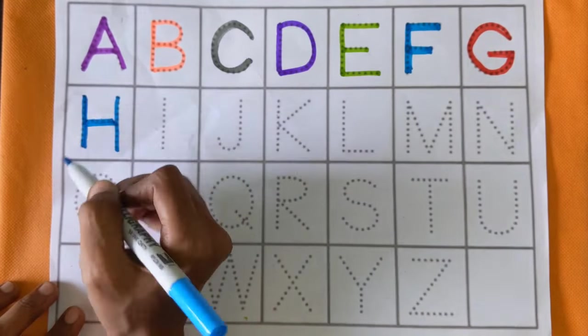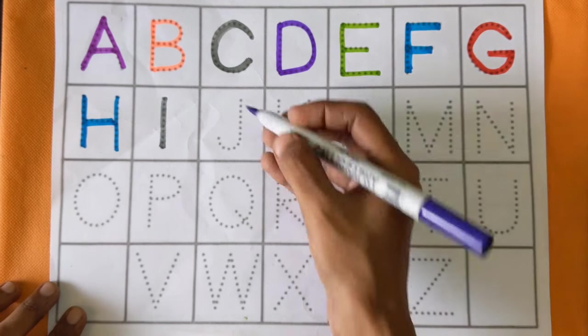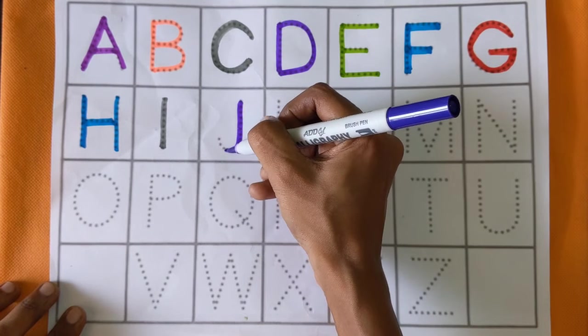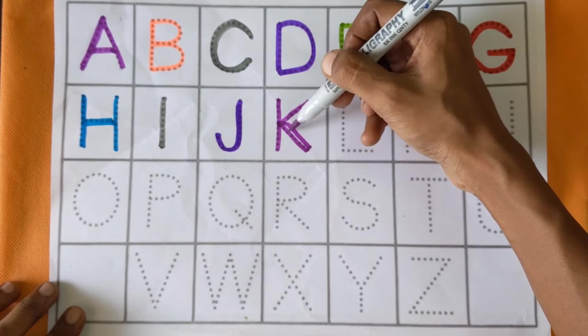Next alphabet is I. I for ice cream and I for internet, gray color. This is J. J for joker and J for jet, violet color. This is K alphabet. K for kingdom and K for kite, purple color.